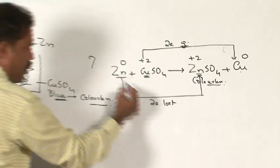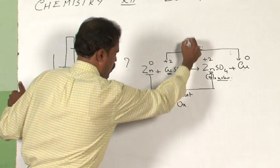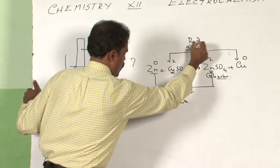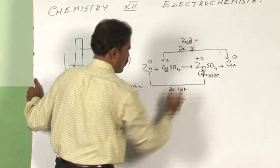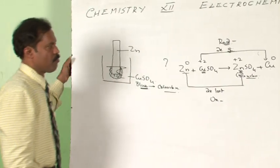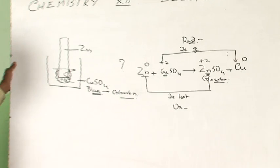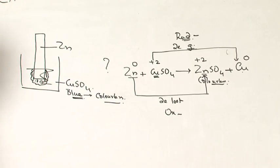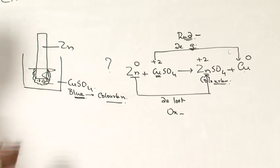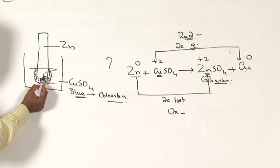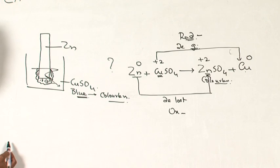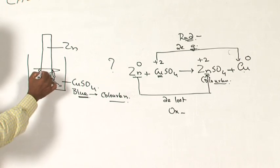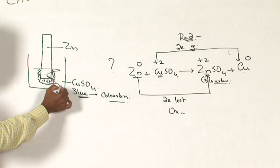Zinc is getting oxidized, copper is getting reduced — and as you know, oxidation is loss of electrons and reduction is gain of electrons. The ultimate change is that electrons from zinc are getting transferred to the Cu²⁺ ions which are in the solution. So it is the transfer of electrons from zinc metal to Cu²⁺ ions.